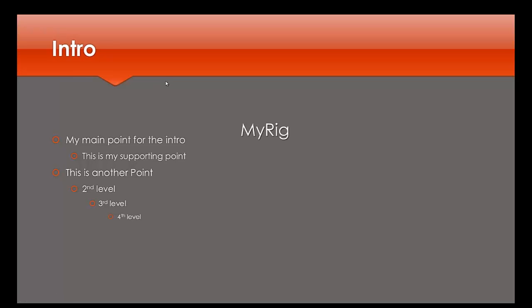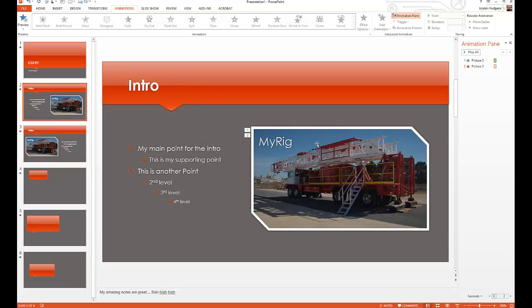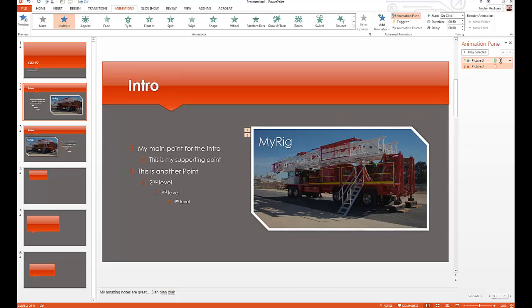If I click my mouse, the image appears, and clicking again triggers the fade out, then clicking again moves to the next slide. There are times you'd want this — for example, giving a presentation with a layered pyramid display where you reveal the bottom layer, talk about it, then click to reveal the next layer. Sometimes you do want the next animation to wait until you're ready. However, in this case I don't want to click to load the image — I just want a nice delay and then have it load automatically.